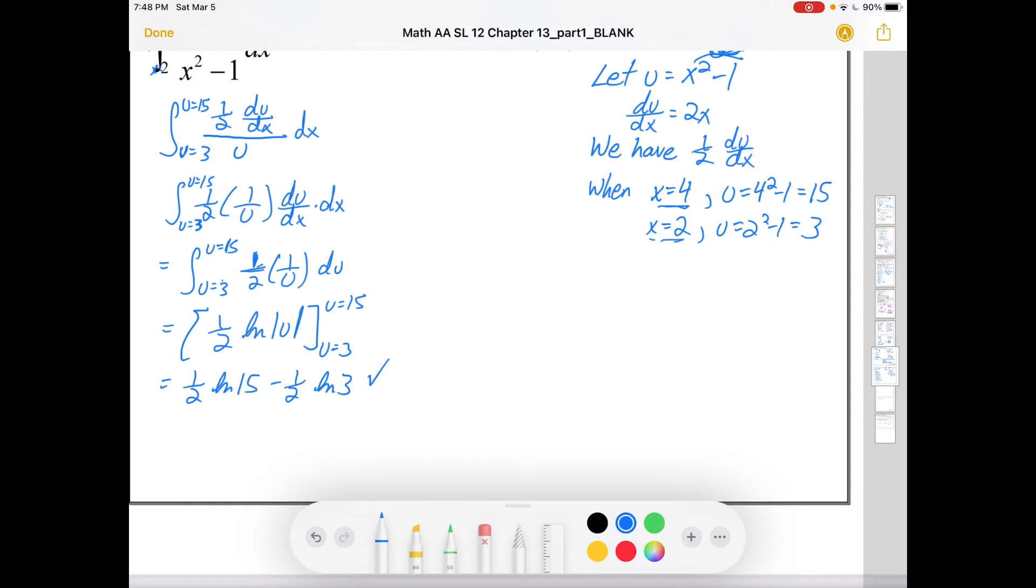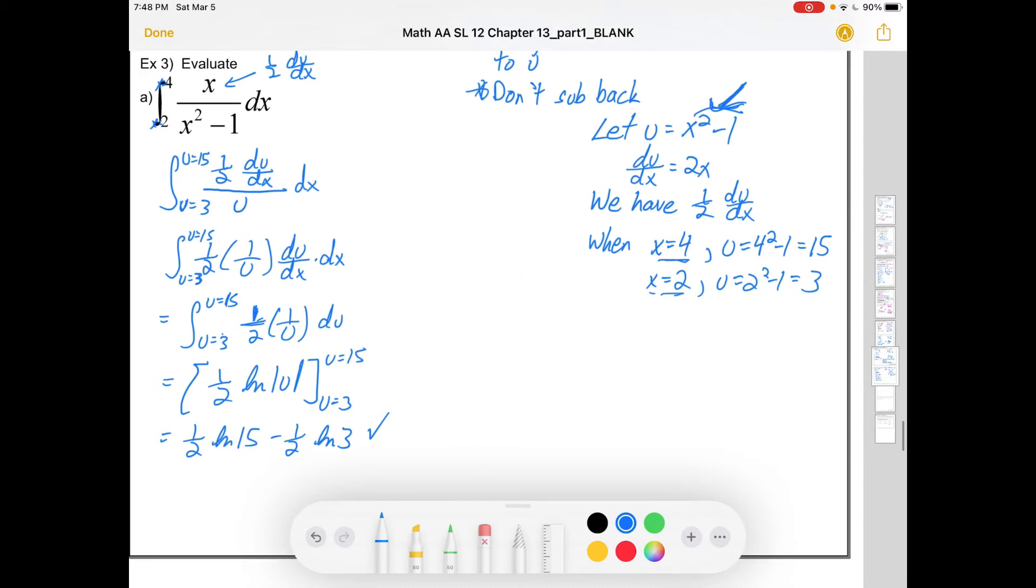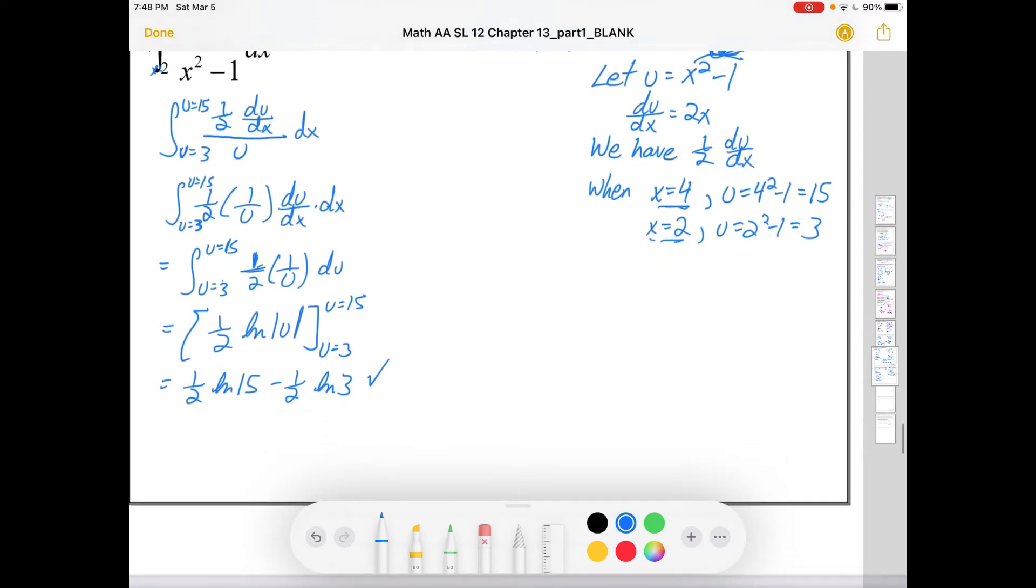It'll be 1 half ln 15 minus 1 half ln 3. That's the correct answer right here. We could find it as a decimal approximation. Though honestly if we had our GDC you just type in the original question. If I want to make it even prettier we can do some log stuff. So that's 1 half ln 15 minus ln 3 or 1 half ln 15 over 3 from log laws or 1 half ln 5 or ln 5 to the half or probably in its prettiest form ln of the square root of 5. Those are all equivalent.